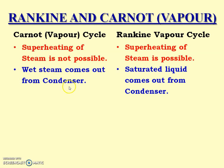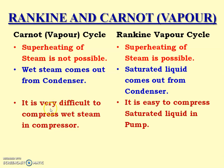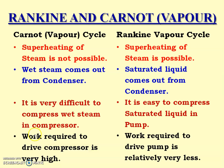Wet steam comes out from the condenser in Carnot vapor cycle, while saturated liquid comes out from the condenser in Rankine vapor cycle. It is very difficult to compress wet steam in a compressor, while it is easy to compress saturated liquid in a pump for the Rankine vapor cycle. So compression is very easy in Rankine cycle, while compression is very difficult in Carnot vapor cycle. Work required to drive the compressor is very high in Carnot vapor cycle, while work required to drive the pump is relatively very less in Rankine vapor cycle.